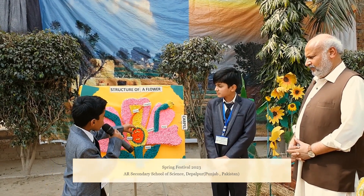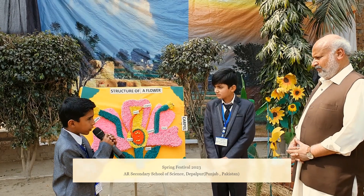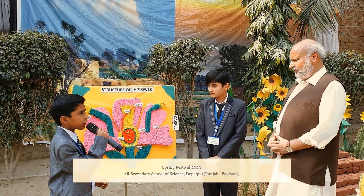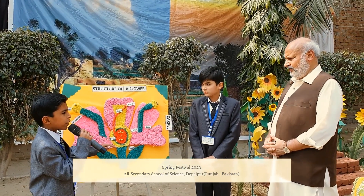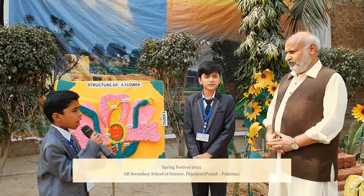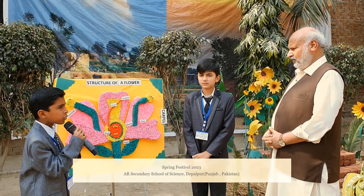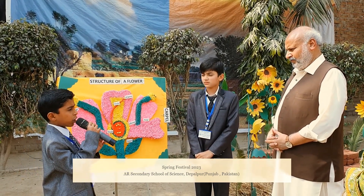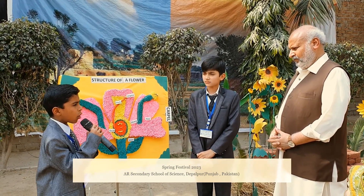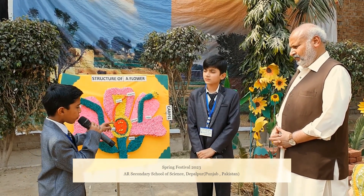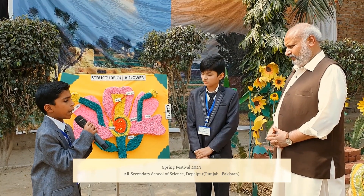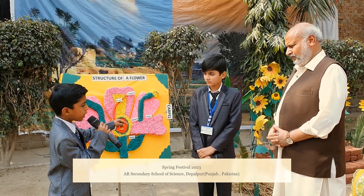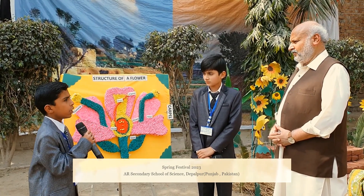This long thread that connects the stigma to the ovary is called the style. At the bottom of the carpel, there is a large structure called the ovary. It is a reproductive organ that holds a lot of ovules and helps in the production of gametes within the ovules.